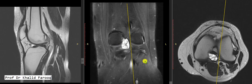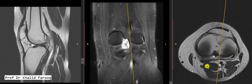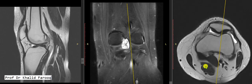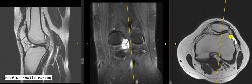Here we can confirm this multi-septated ganglion cyst behind the posterior aspect of the posterior cruciate ligament. This is the intercondylar notch, this is the posterior cruciate ligament, and here we can see an oval-shaped, multi-septated cyst behind the posterior aspect of the posterior cruciate ligament. This is a ganglion cyst behind the posterior aspect of the cruciate ligament.